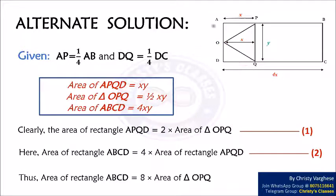Now area of rectangle ABCD is equal to length times breadth, that is 4X times Y. Clearly the area of rectangle APQD is equal to 2 times the area of triangle OPQ. Let this be equation 1.